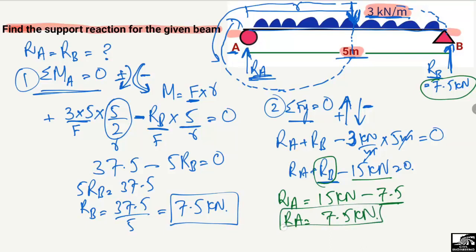So both support reactions are found: R_A = 7.5 kilonewton and R_B = 7.5 kilonewton. Hope you guys understand how to find out the support reactions. Don't forget to subscribe to our channel for daily engineering videos. Thank you for watching.